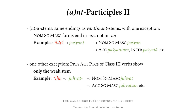Participles formed using ant or nt have exactly the same endings as want/mant stems, with one exception: the nominative singular masculine forms end in an, and not — as we saw with gunavant — in ān. So for example, of the present active participle of dṛś, present tense paśyati ('to see'), we have the stem paśyant, and the nominative singular masculine form paśyan. All other forms are then exactly parallel to the forms of gunavant: gunavantam / paśyantam, gunavatā / paśyatā, and so on.